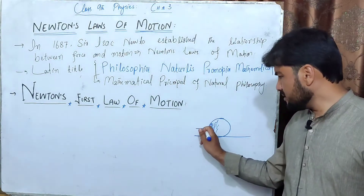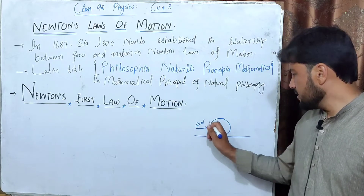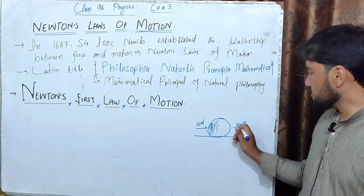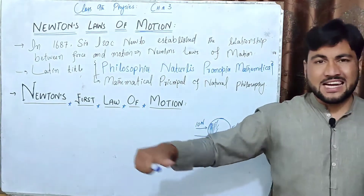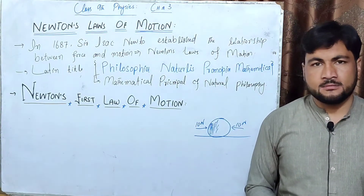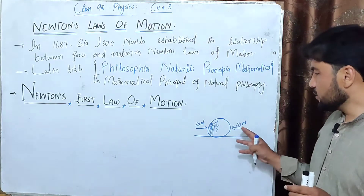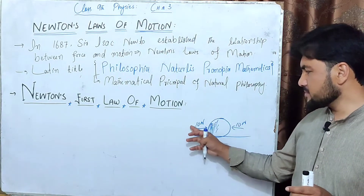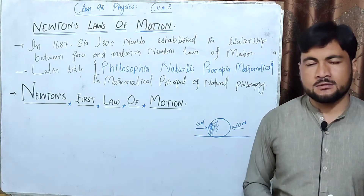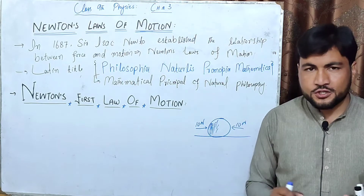If you look at the diagram, on the right side there is a 10N force, and on the left side there is also a 10N force. This means the forces on the right and left sides are equal in magnitude — F1 and F2 are the same.